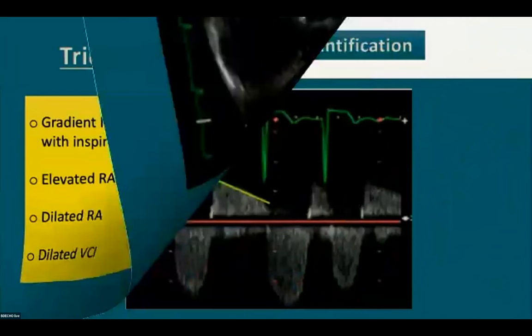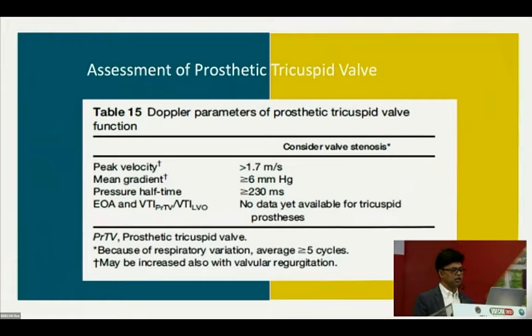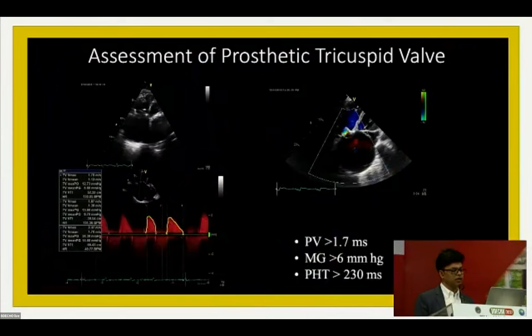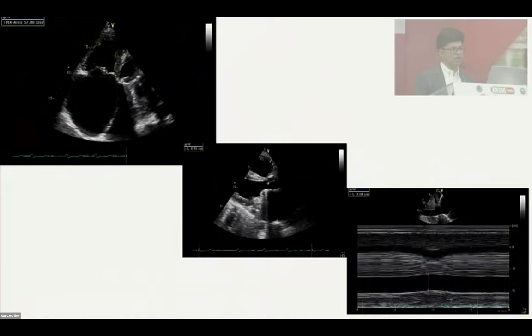Quantification of tricuspid stenosis: peak velocity more than 1.7 m/s, mean gradient more than 6 mmHg, pressure half-time more than 230 ms, and tricuspid valve area calculated as 190 divided by pressure half-time. In my patient: peak velocity 2 m/s, mean gradient 9 mmHg (significant), pressure half-time averaged 240 ms — all parameters indicating severe tricuspid stenosis. There was also severe tricuspid regurgitation with a candle-flame sign, dilated non-collapsible IVC, and collapsibility index less than 20%.